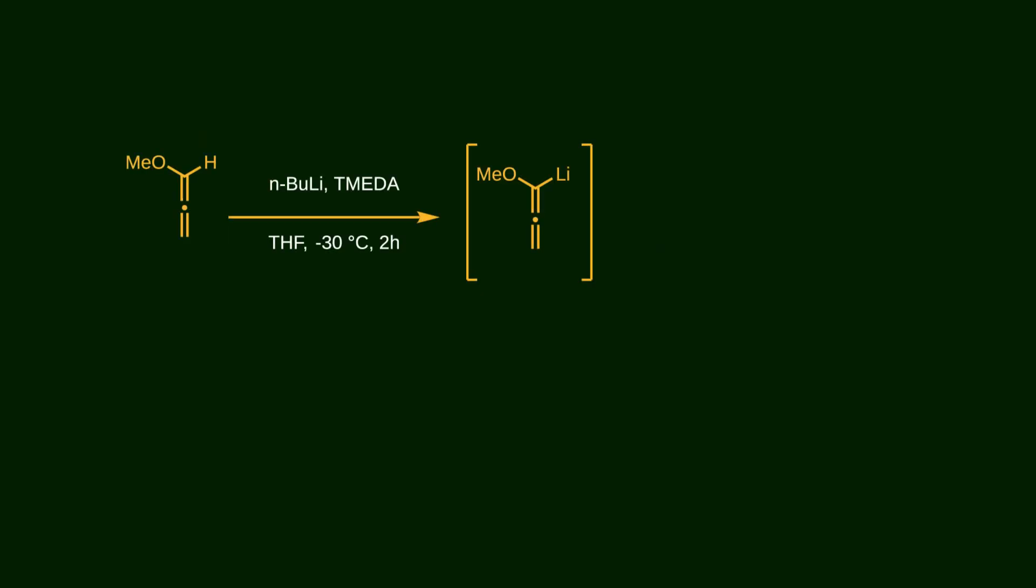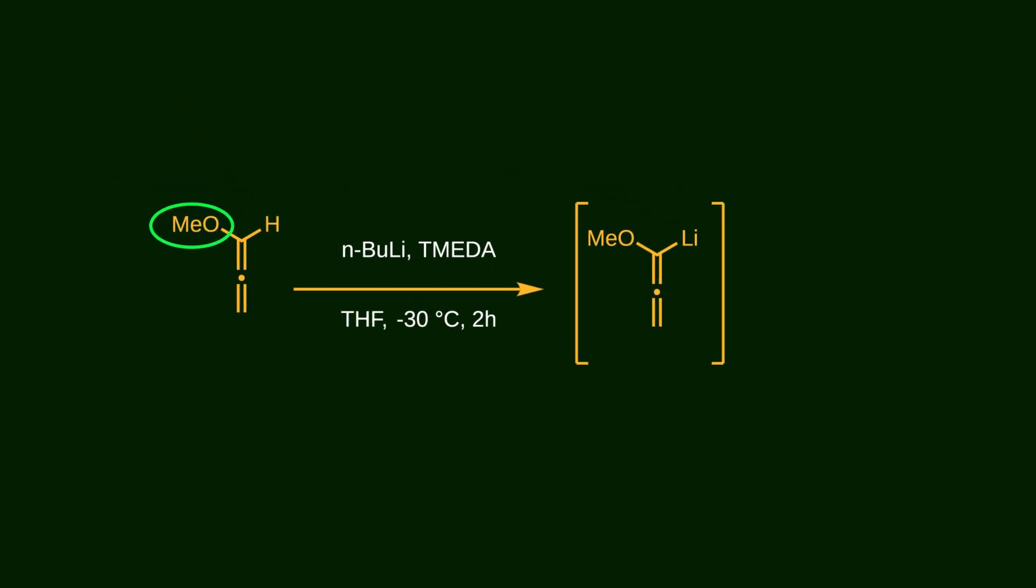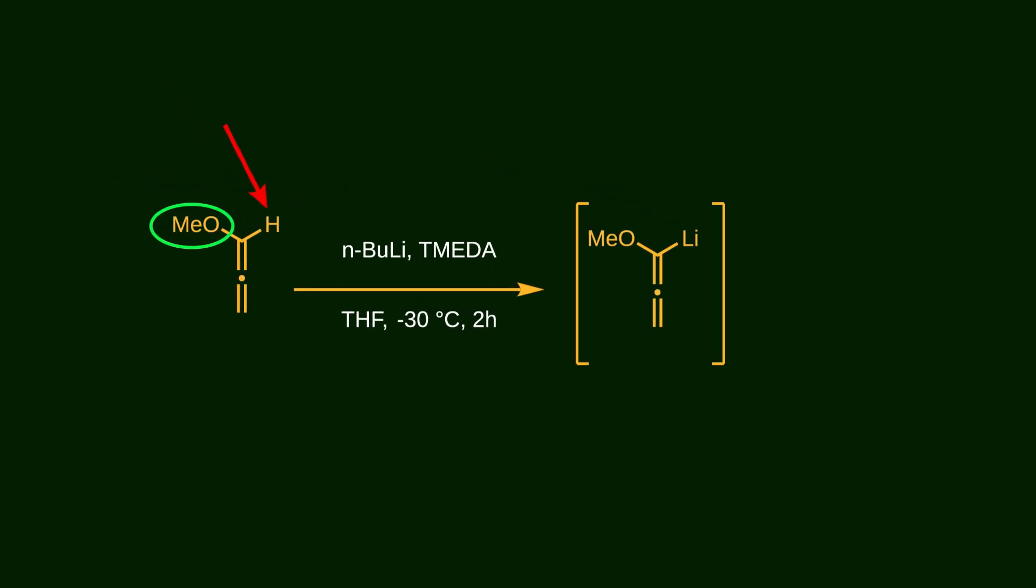The synthesis begins with methoxyallene. It's treated together with TMEDA and n-butyl lithium. Due to the electronic effect of the methoxy group, this hydrogen atom is relatively acidic. What's going to happen here is that n-butyl lithium acts as a base, abstracts the proton, and turns methoxyallene into its active form, making it a suitable nucleophile.